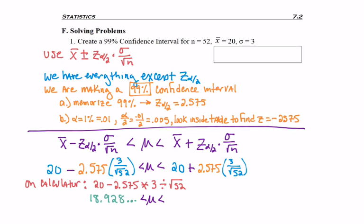I would do that again for the plus or positive margin of error. I get 21.0712. Assuming I'm asked to answer with one place to the right of the decimal, I would be looking at 18.9 to 21.1. Let's put that up in our answer box.